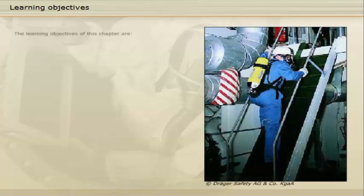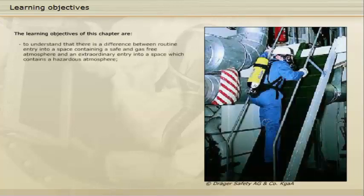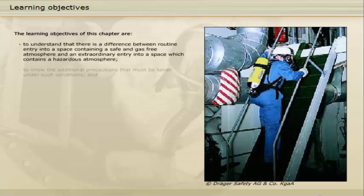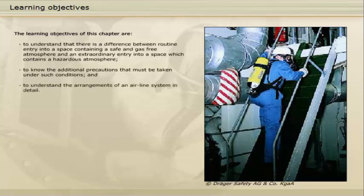The learning objectives of this chapter are to understand that there is a difference between routine entry into a space containing a safe and gas-free atmosphere and an extraordinary entry into a space which contains a hazardous atmosphere, to know the additional precautions that must be taken under such conditions, and to understand the arrangements of an airline system in detail.